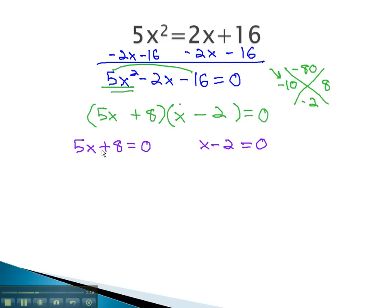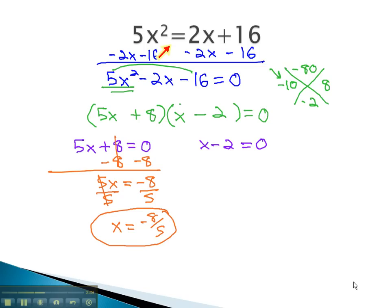Solving each of these equations, we'll find our solution for x. Subtracting 8 from both sides gives us 5x equals negative 8. Finally, dividing by 5 gives us our final answer of negative 8 fifths, which makes the first factor 0, and thus the original equation true when we plug in negative 8 fifths.